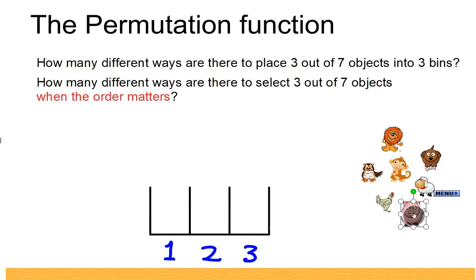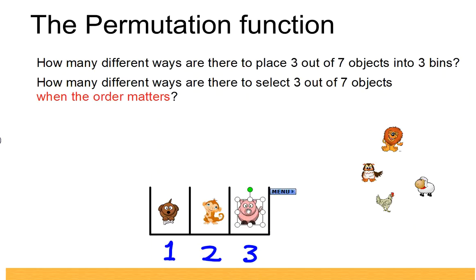Now that we've done the factorial, it's quite easy to figure out how many ways there are to do that. We start with the first bin—for the first bin we have 7 possibilities. So let's say we take the dog. Then the second bin, we have 6 possibilities. And for the third bin, we have 5 possibilities. So in total what we get is 7 times 6 times 5.